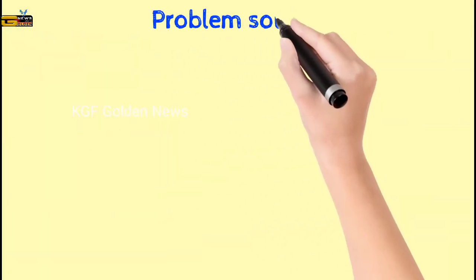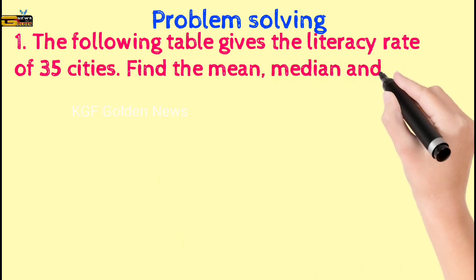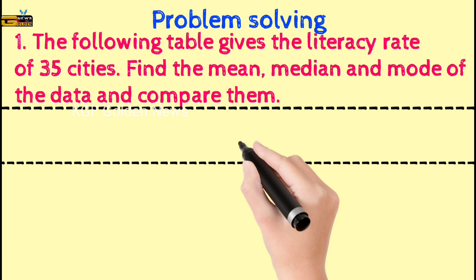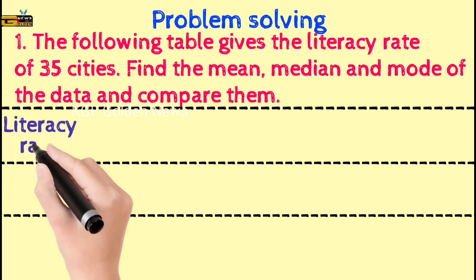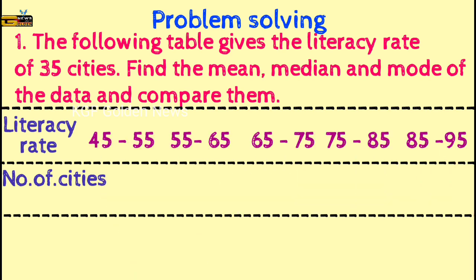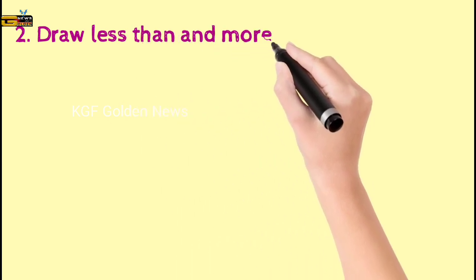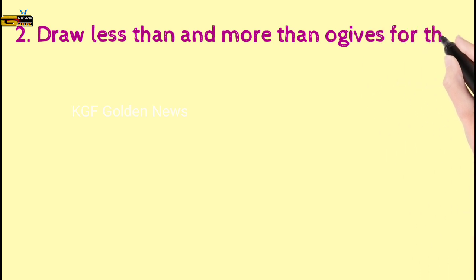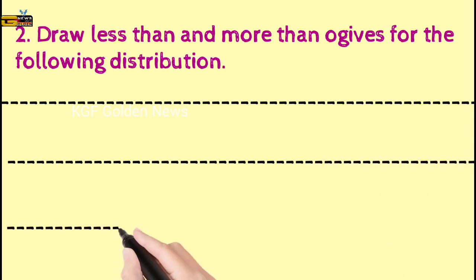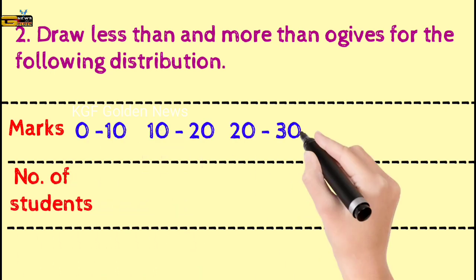Try to solve the following problems. The following table gives the literacy rate of 35 cities — find the mean, median and mode of the data and compare them. Next, draw the less than and more than ogives for the following distribution showing marks obtained and number of students.